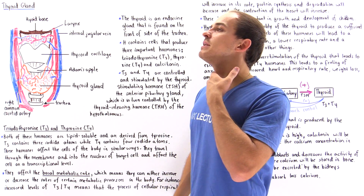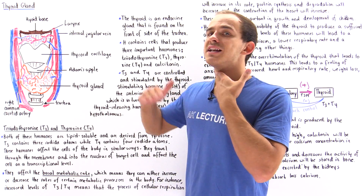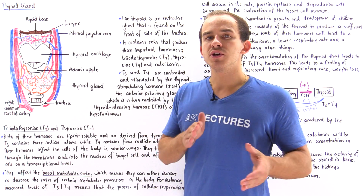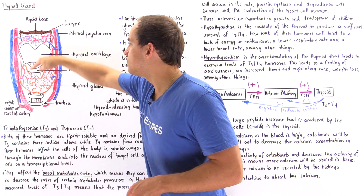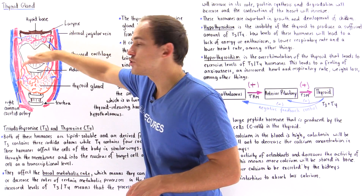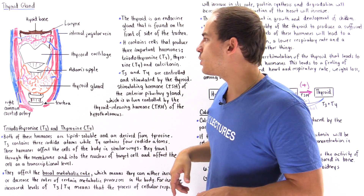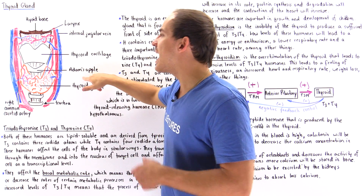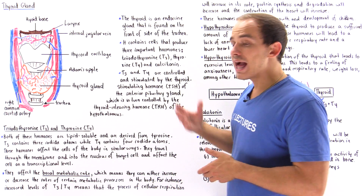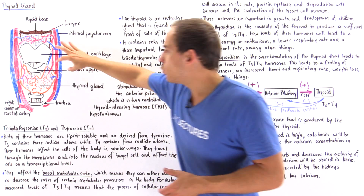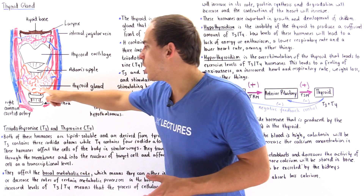Beginning with our Adam's apple — this region here — right above the Adam's apple is something known as the thyroid cartilage. Above that we have our larynx, and then we have a bone known as the hyoid bone. Now below the Adam's apple is our thyroid gland, which is this orange structure here.